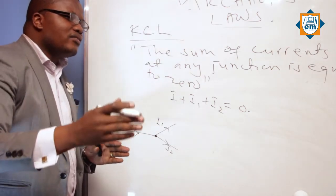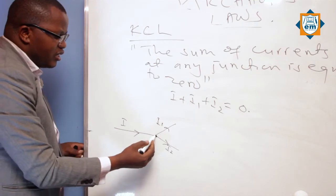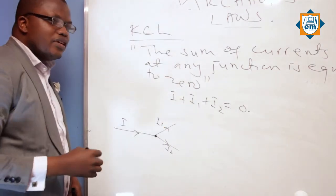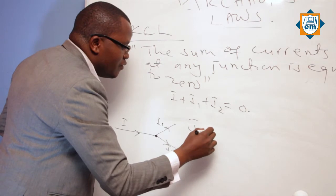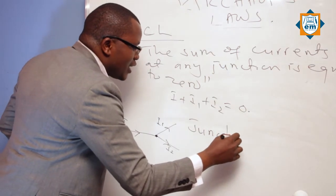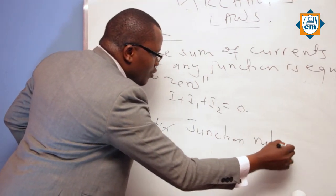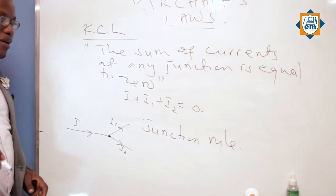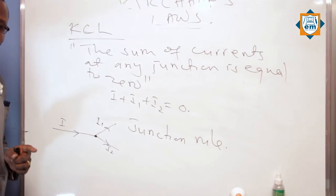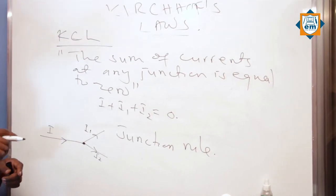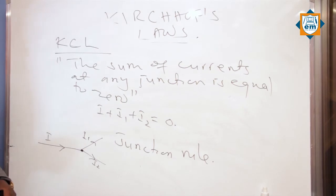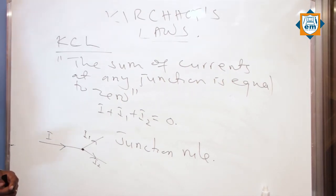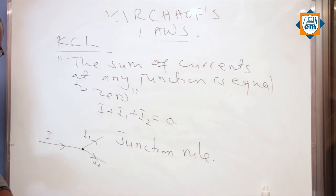Ukiangalia ya kwanza na ya pili, zote zinazungumzia nini? Junction. Kwa hiyo KCL vile vile inajulikana kama junction rule. Kwa hiyo kwenye mtihani, ukiambiwa state junction rule, maanisha ni kukuambia state Kirchhoff first law — kwa lugha nyingine, kukuambia state Kirchhoff current law.